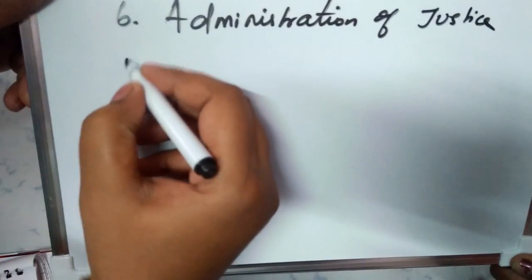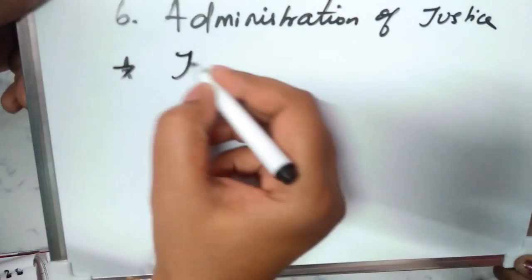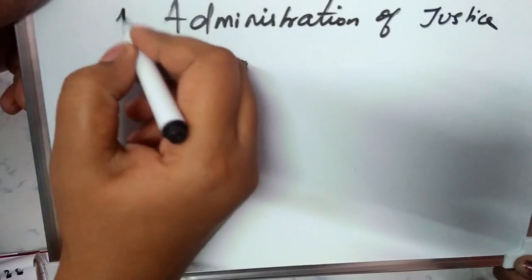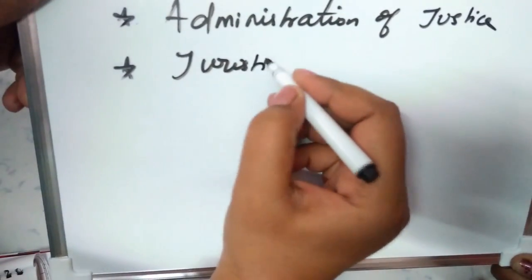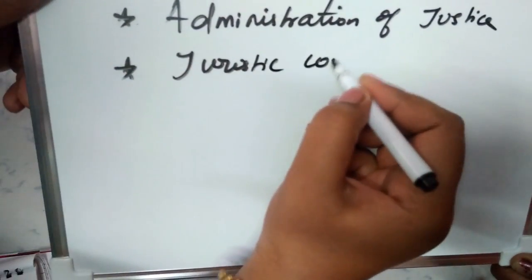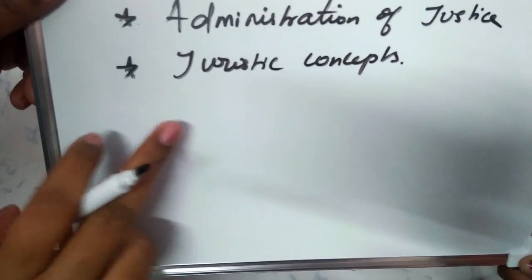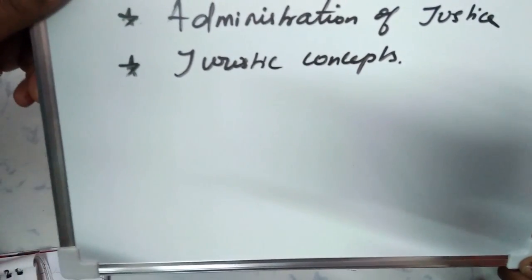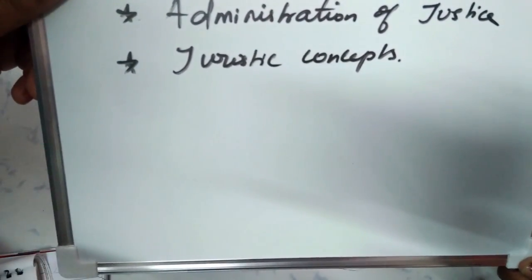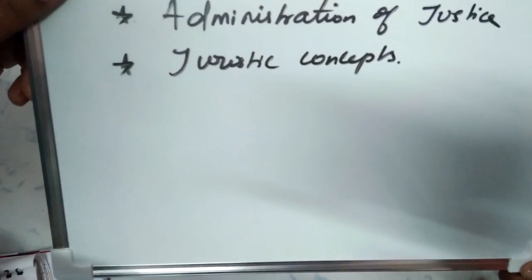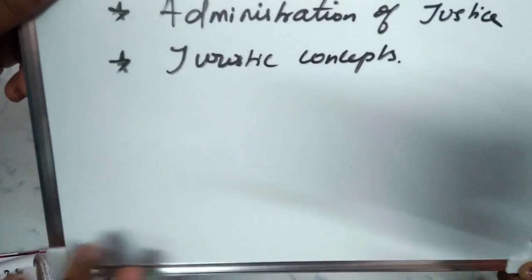The seventh chapter is juristic concepts. Juristic concepts include: Rights and duties, Titles, Persons, Liability, Ownership, Possession, Property, and Obligation.